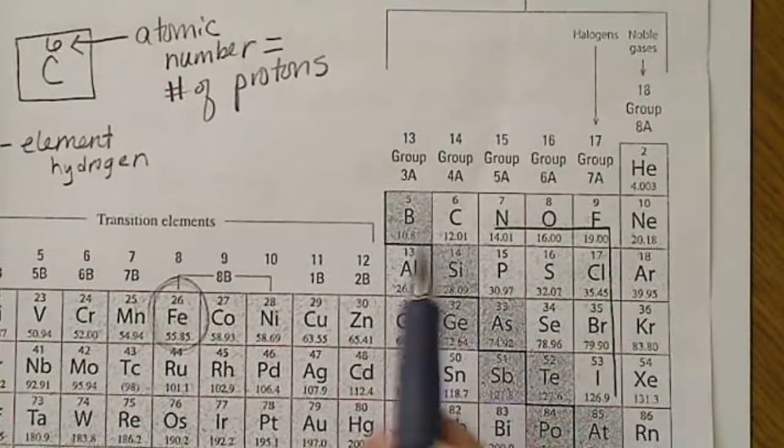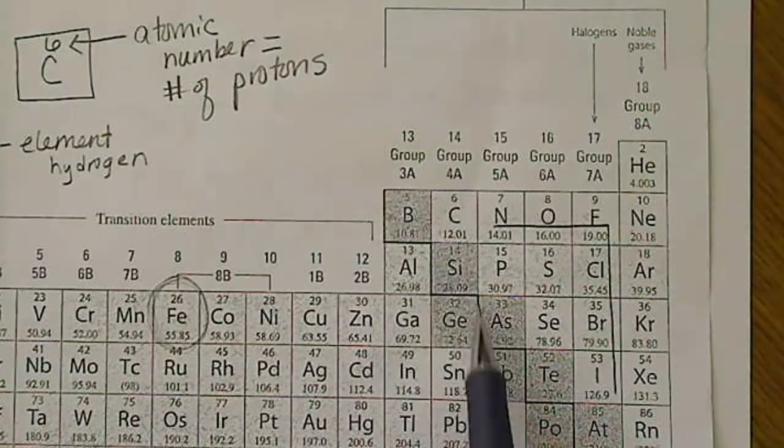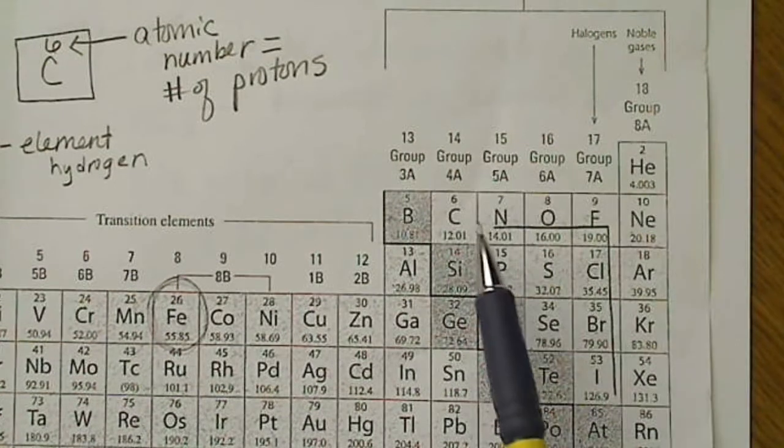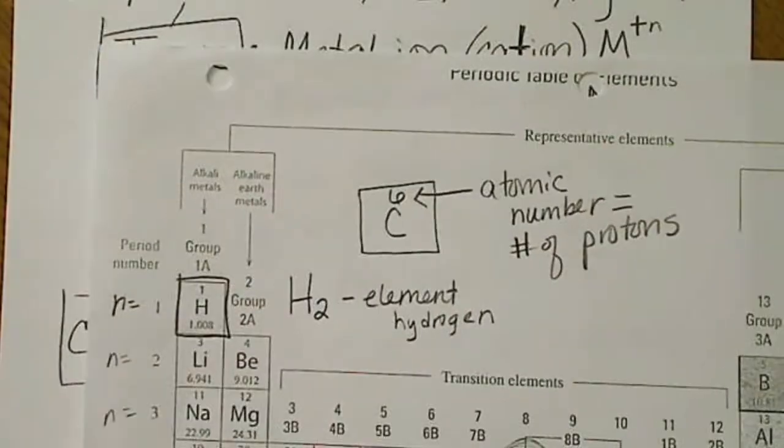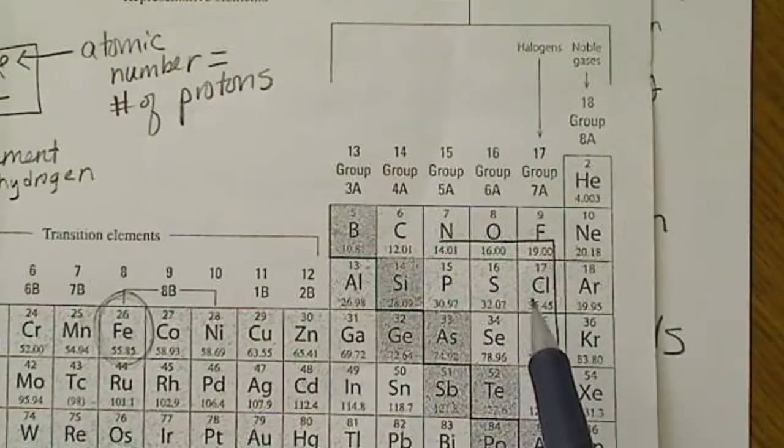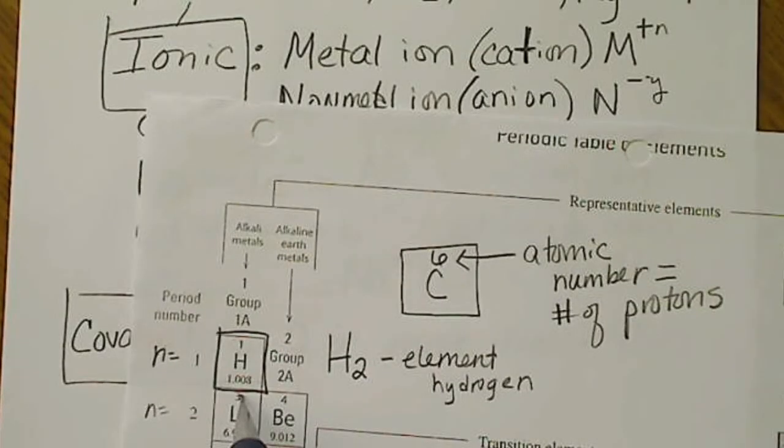So the distinction between metals and non-metals is this bold line. Everything to the right of this line is a non-metal, and hydrogen is also a non-metal, so we have to remember that.